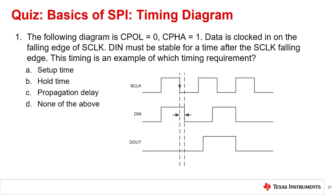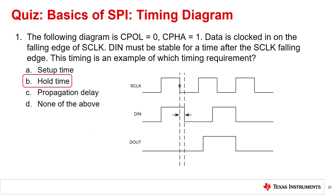Question 1: The following diagram uses CPOL=0 and CPHA=1. Data is clocked in on the falling edge of S-Clock. DIN must be stable for a time after the S-Clock falling edge. This timing is an example of which timing requirement? The correct answer is B, hold time.